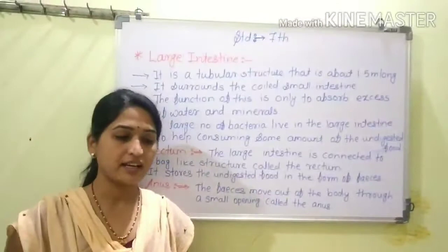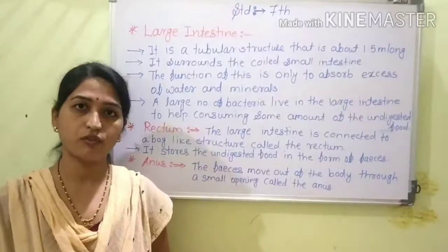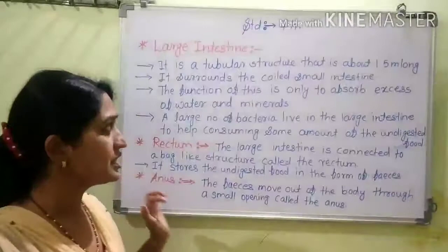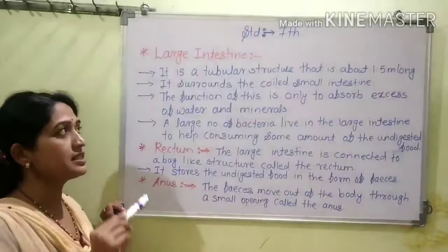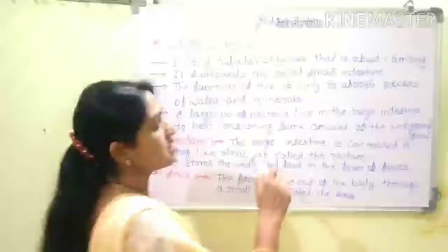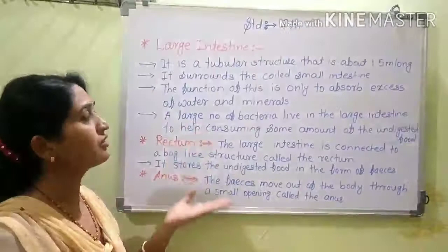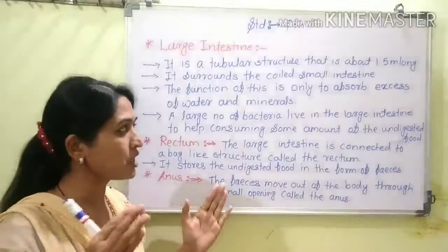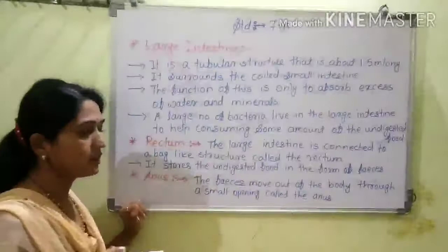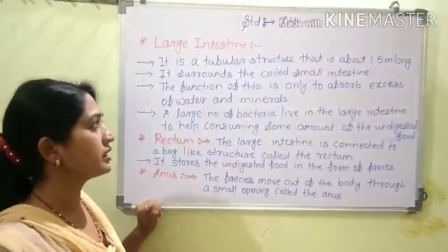The large intestine surrounds the coiled small intestine in the abdomen. It is a tubular structure about 1.5 meters long, and it surrounds the coiled small intestine.